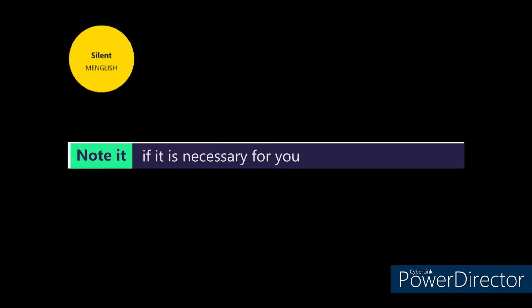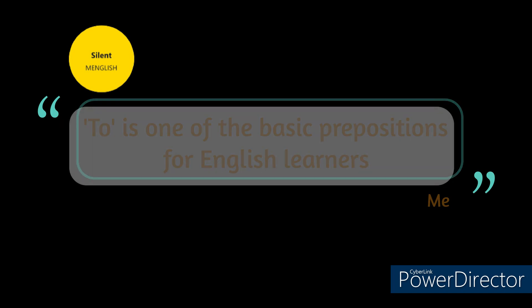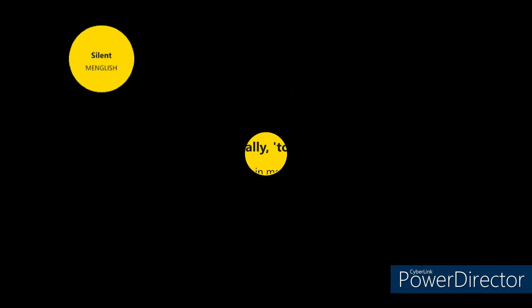"To" is one of the basic pronunciations for English learners. Basically, "to" has two main meanings.